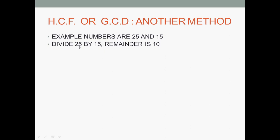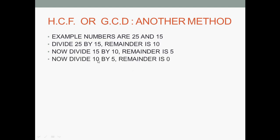The number we divided by becomes the dividend, and the remainder becomes the divisor. Now we divide 15 by 10, which gives remainder 5. We repeat: 10 becomes dividend, 5 becomes divisor. We divide 10 by 5, and the remainder is 0. When the remainder is 0, the number we divided by becomes the HCF. So the number is 5. This is the method.